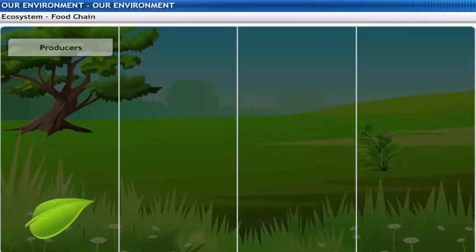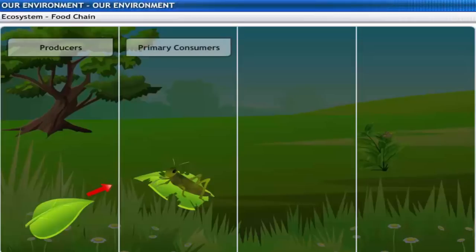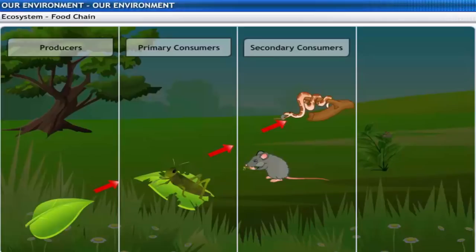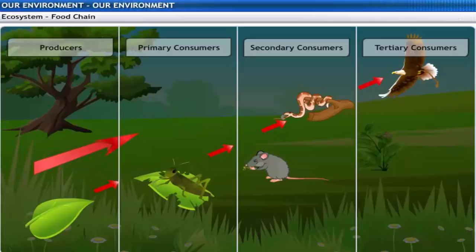The autotrophs or the producers, that is the plants, are at the first trophic level. The herbivores or the primary consumers, like bees and insects, come at the second level. Small carnivores like rats and snakes, or secondary consumers, come at the third level, and larger carnivores like an eagle, or tertiary consumers, form the fourth trophic level. Did you know that a huge amount of energy is lost at each stage in the food chain?